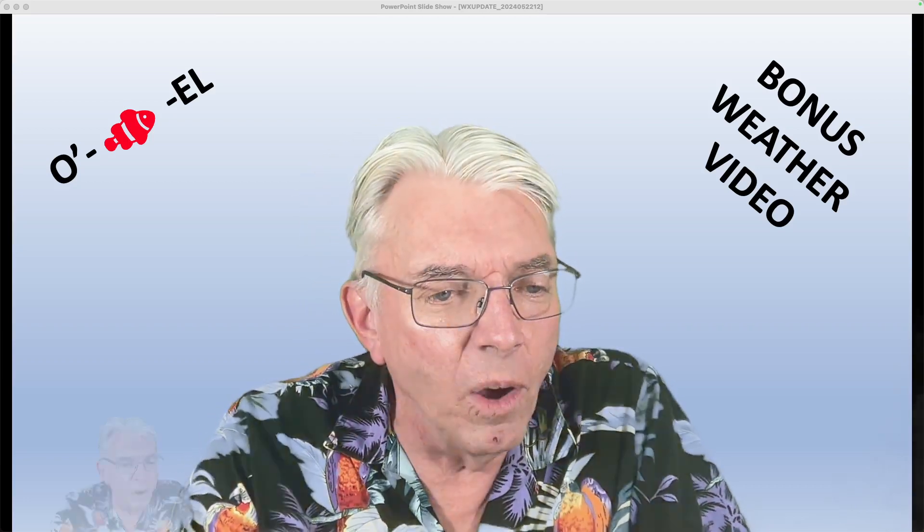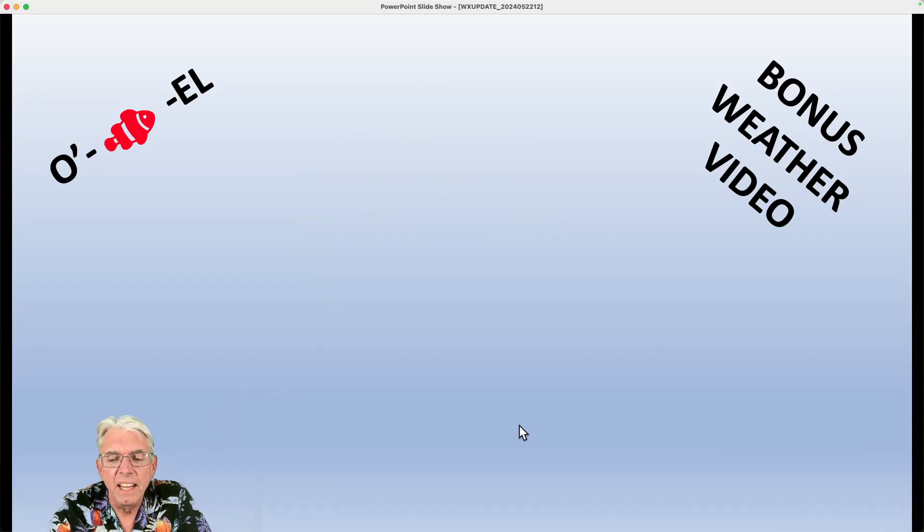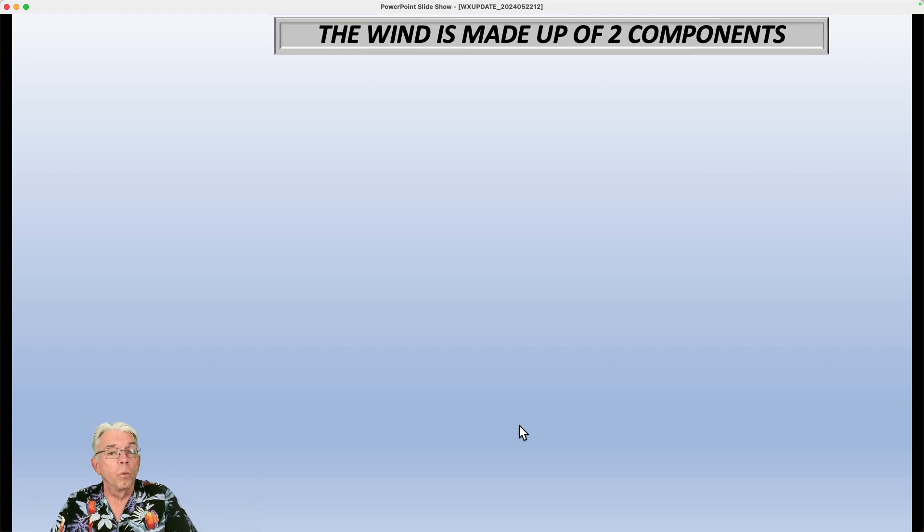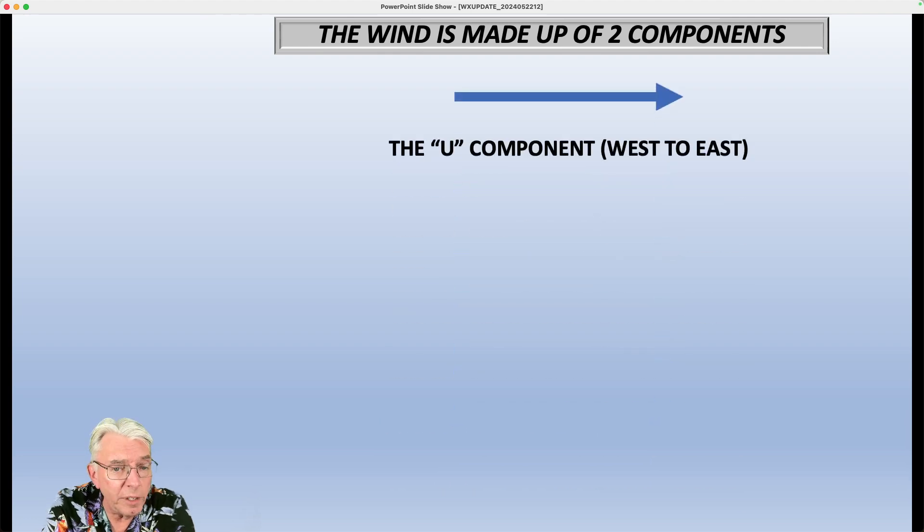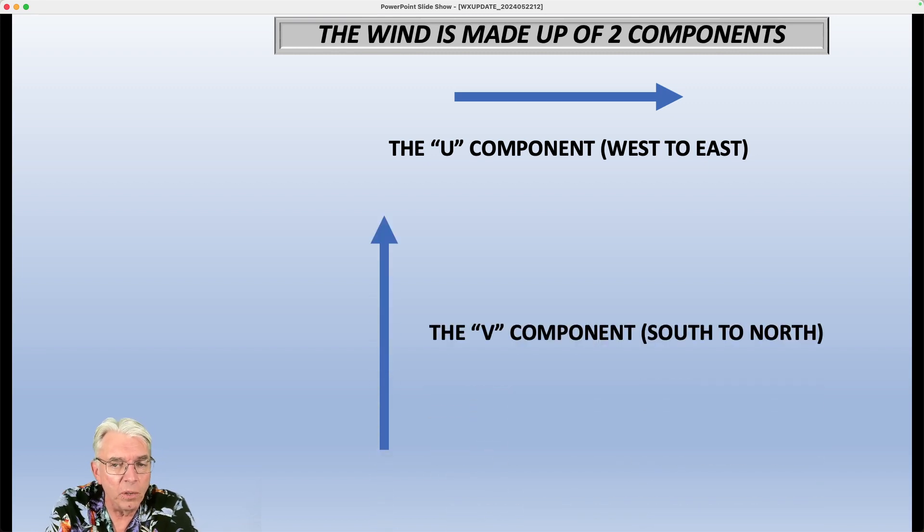But let's go ahead here and take a look at something called, well, first of all, we're going to talk about how you can split the wind up into two components. And this is critical for being able to make calculations about what's going on in that wind field. So the U component of the wind is the west to east component, and the V component of the wind is the south to north component.